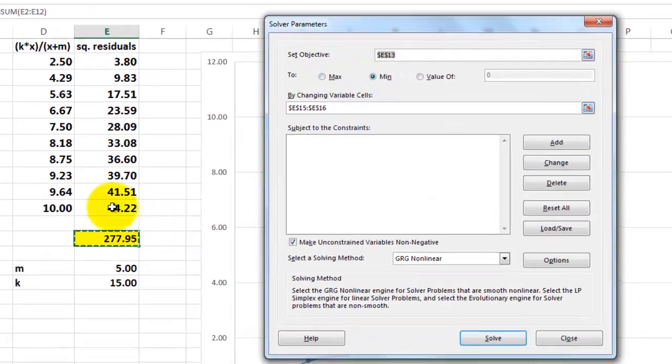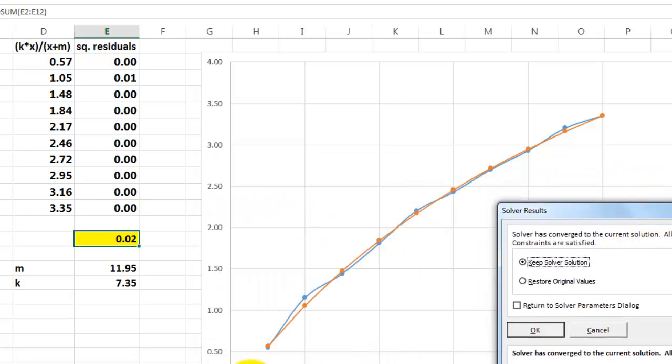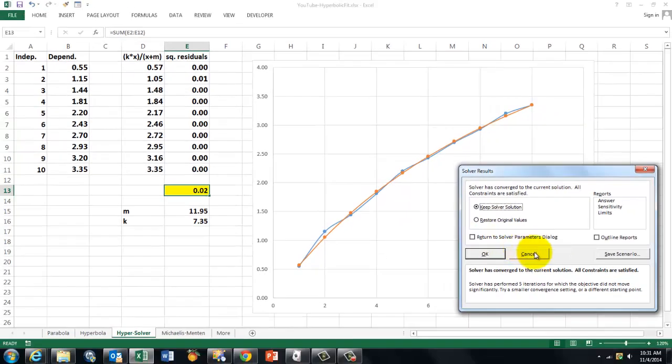Data Solver. And we say set E13, the sum of the squared residuals, to a minimum by changing the variables that we see here, 5 and 15. And when you click on Solve, it will show you the hyperbolic curve laid over the other one. And you could do all the other things. You could do the curve fitting issues again and you see we got a very low sum of squared residuals. I'm canceling this.